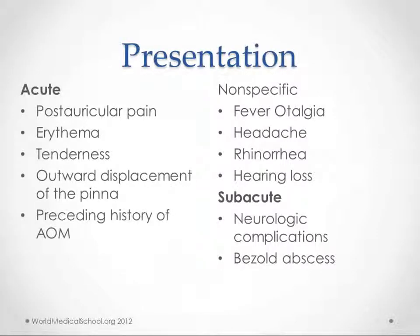In an acute presentation, usually these kids will have postauricular pain — just pain behind their ear, some redness, some tenderness back there. Some of them will also have outward displacement of the pinna, so the ears kind of stick out. In most cases, you'll have a preceding history of acute otitis media, but in some cases they won't remember or didn't notice because it was a fairly asymptomatic infection. The consensus is that basically all of these do come from acute otitis media.